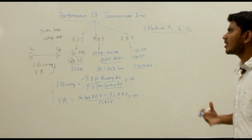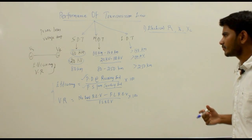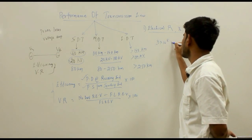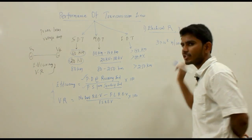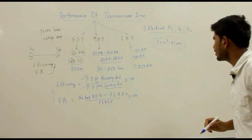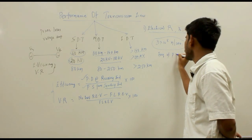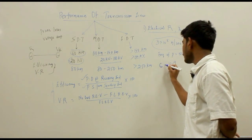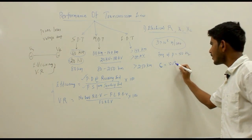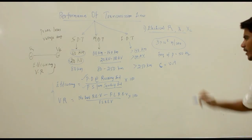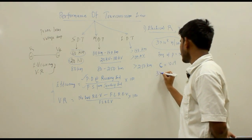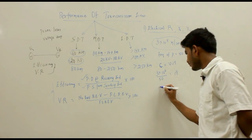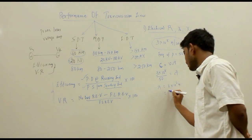Let us find the wavelength of the power transmitted from one end to the other. Power is transmitted over the transmission line at the speed of light, which is 3×10⁸ meters per second, and the frequency of power is 50 Hz. Using the formula C = f·λ, the wavelength λ = (3×10⁸) / 50 = 6×10⁶ meters, that is 6000 kilometers.